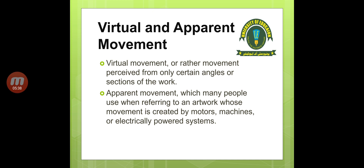Apparent movement refers to artworks whose movement is created by motors, machines, or electrically powered systems. A machine creates movement within the sculpture piece. Kinetic art sculptures created this way are also called op art.